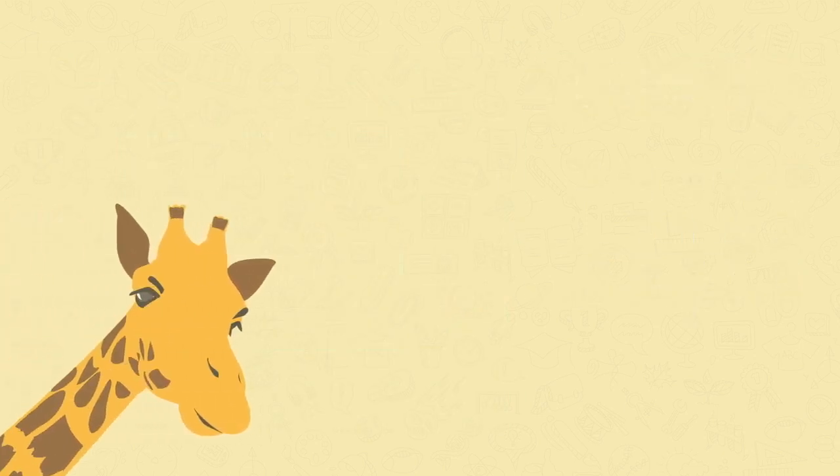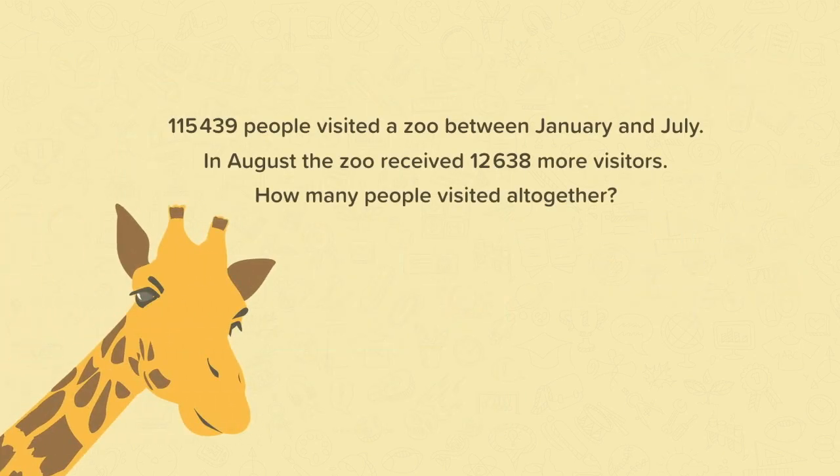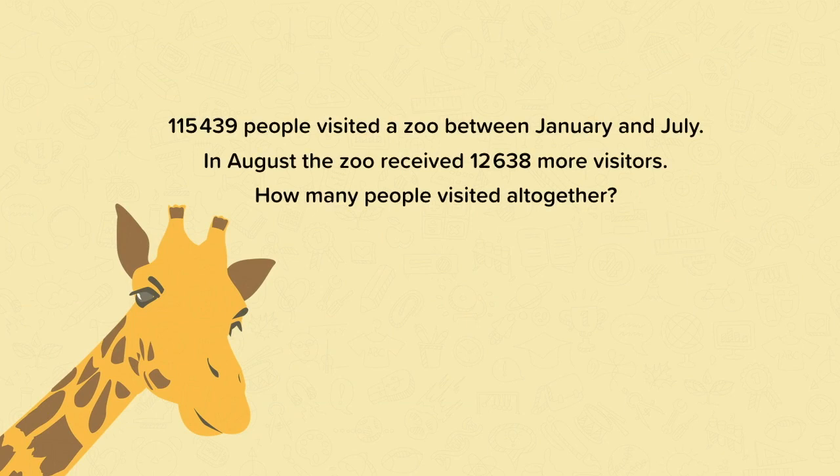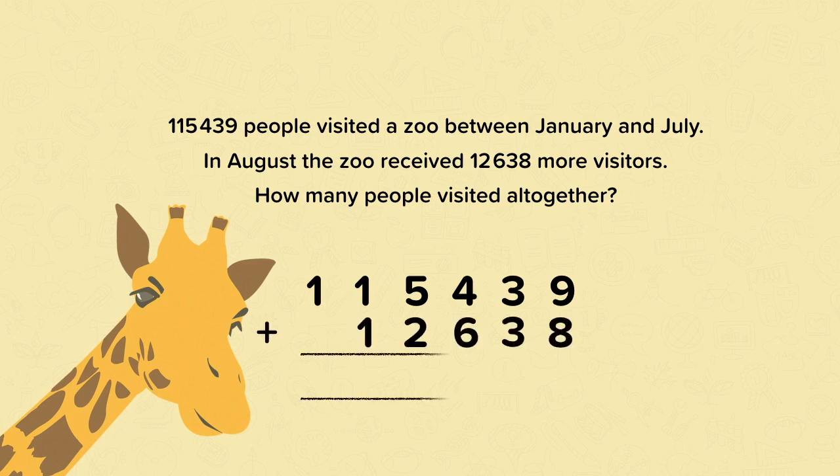Now let's have a look at a word problem. 115,439 people visited a zoo between January and July. In August, the zoo received 12,638 more visitors. How many people visited altogether? So we start with the number of visitors in January and July, and then we add the number of visitors in August.